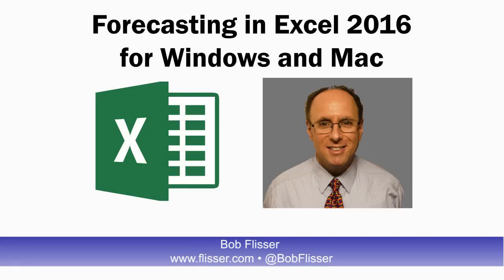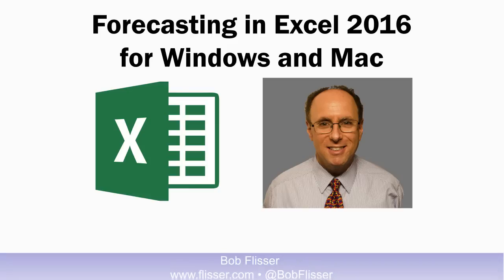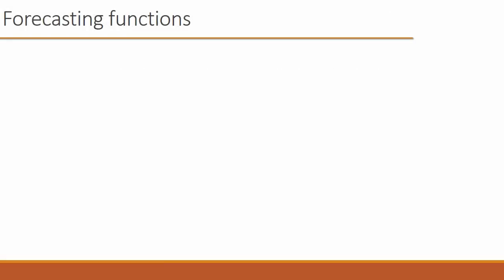The older forecast function still exists for backwards compatibility with worksheets created in older versions, but if you're creating a new worksheet, you want to use one of these. The first one I'll show you is called FORECAST.LINEAR — that's the actual name of the function. Some functions have dots in them, and that's a straight line estimate, most similar to the older forecast function.